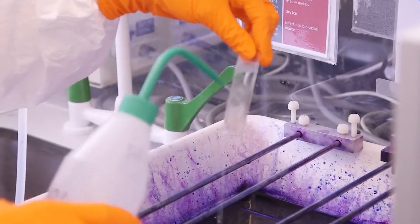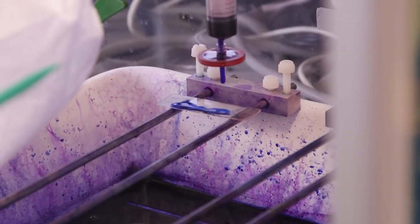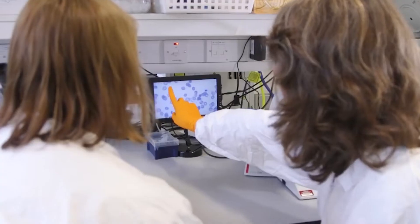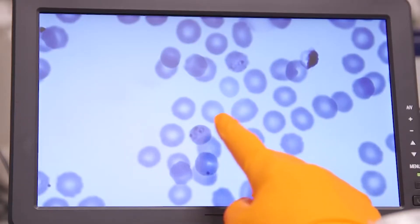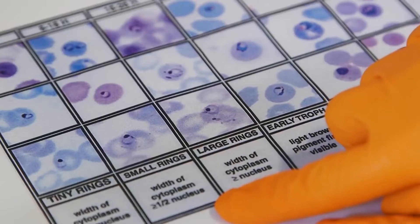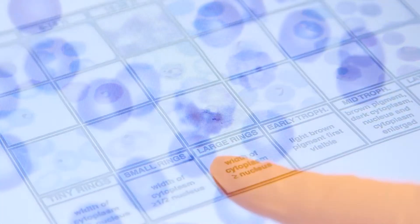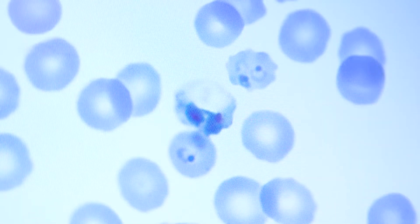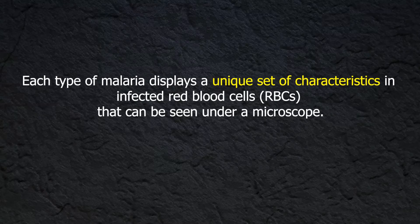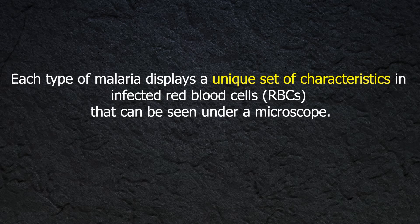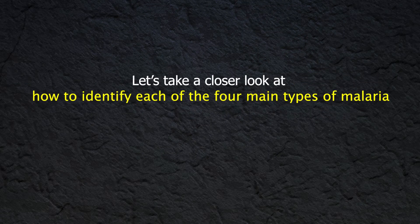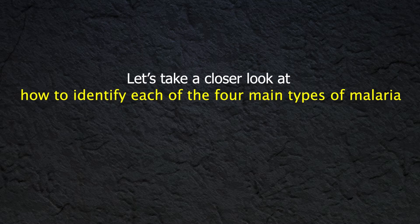We already know the gold standard malaria diagnosis test is the screening of thick and thin blood smears with Romanowsky stain. The thin blood smear enables differentiation for medical laboratory professionals. Some morphological characteristics of the infected red blood cells and parasites can be used to direct the diagnosis towards one of the 4 Plasmodium species that infect humans: Plasmodium vivax, Plasmodium falciparum, Plasmodium ovale, and Plasmodium malariae. Each type of malaria displays a unique set of characteristics in infected red blood cells that can be seen under a microscope.